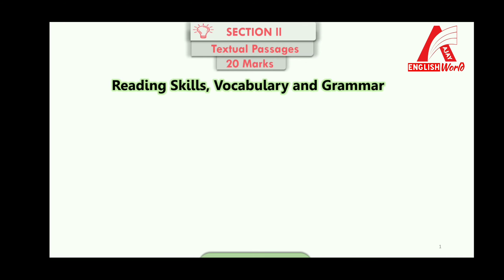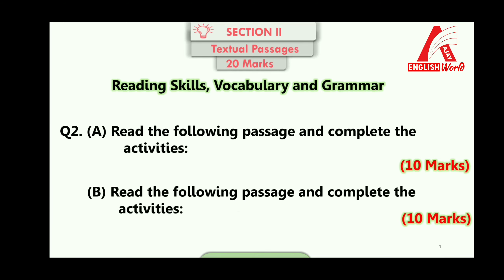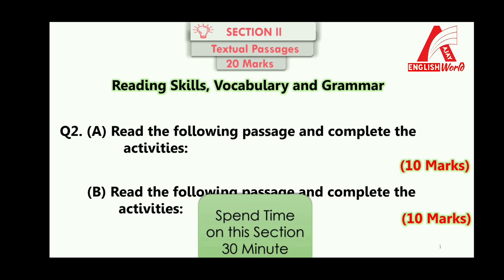Section number two is on textual passages and is for 20 marks. Your reading skill, vocabulary, and grammar will be tested under this section. Question number two A and question number two B are from the prose lessons in the textbook. Each question carries 10 marks, with five activities of 2 marks each. You can give 30 minutes for this section.